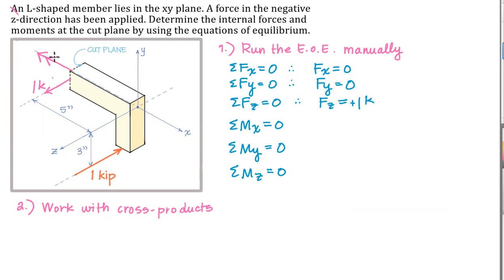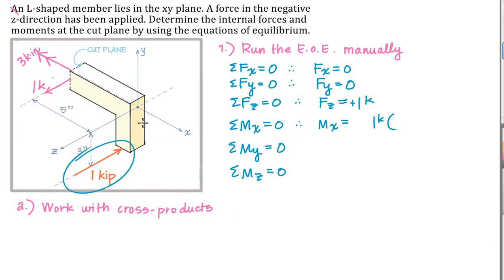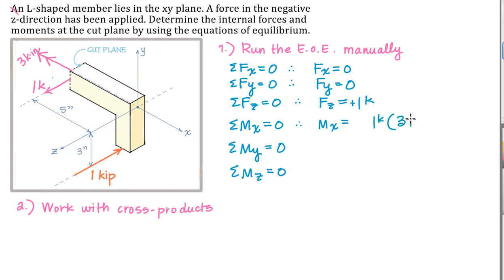The moment has a magnitude of one kip at a distance of three inches, so that's going to end up being three kip-inches. The moment about x is equal to a force of one kip times a perpendicular distance of three inches between the line of action of the force and the centroidal x axis. We need that to point in the negative x direction for static equilibrium.